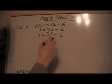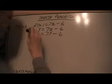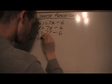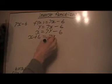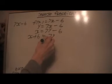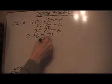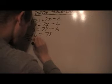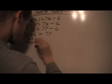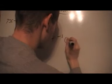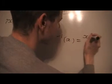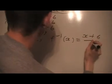So what I'm going to do is I'm going to add 6 to both sides, and I get x plus 6 equals 7y. And then if I divide both sides by 7, then I get y in terms of x. So I get x plus 6 over 7 equals y. And then we'll replace the y by the inverse notation. So I'm going to write f inverse is equal to x plus 6 over 7.